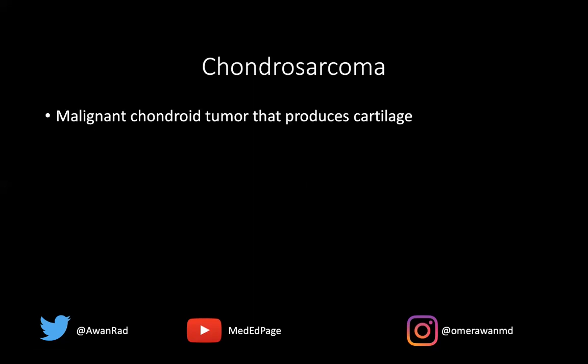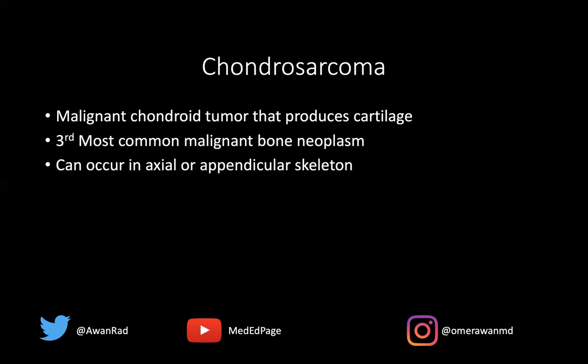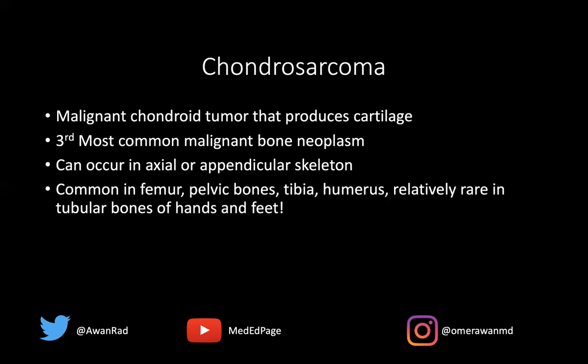A chondrosarcoma is a malignant chondroid tumor that produces cartilage. It is the third most common malignant bone neoplasm after multiple myeloma and osteosarcoma. It can occur anywhere — in the axial or appendicular skeleton — but most commonly in the femur, pelvic bones like the iliac bone, the tibia, and the humerus. It is relatively rare in tubular bones like the metacarpals, metatarsals, and phalanges of the hands and feet. But as this case shows, the lesion is in the metatarsal — rare, but not impossible.